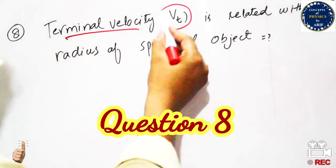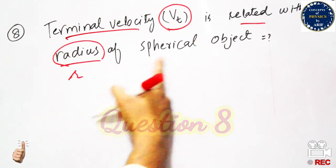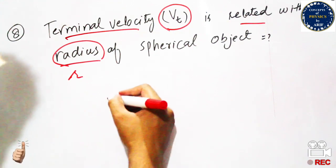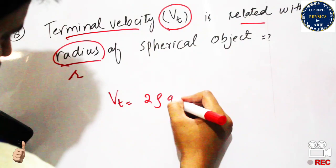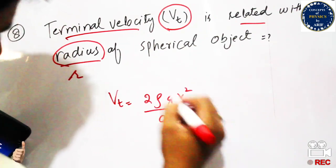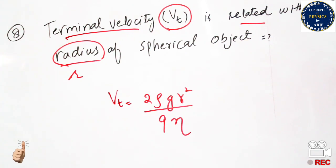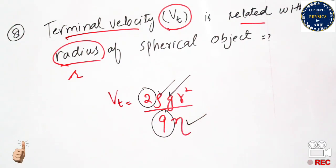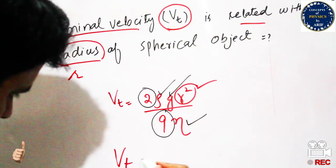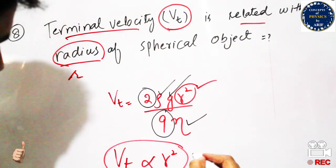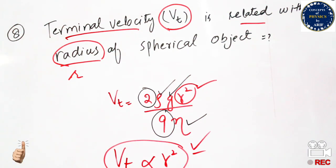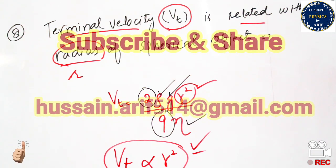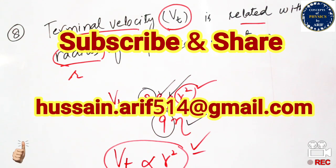The last question asks for the relationship between terminal velocity and the radius of a spherical object. The expression for terminal velocity is v_t = 2ρgr²/(9η). In this expression, 2, ρ, g, 9, and η are all constant quantities. Only r² varies with v_t, so terminal velocity is directly proportional to the square of the radius.